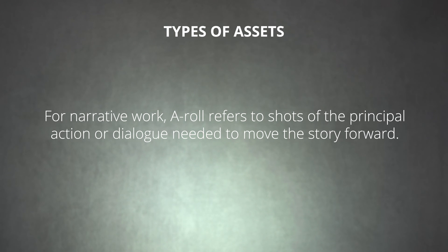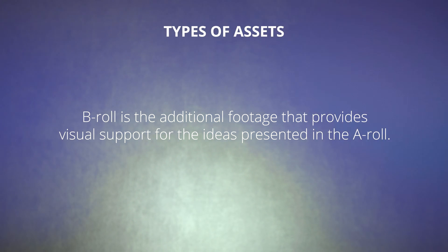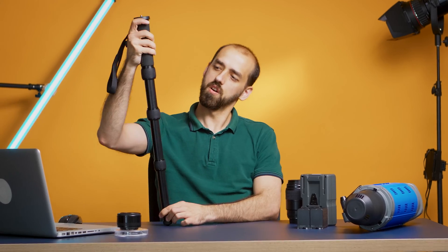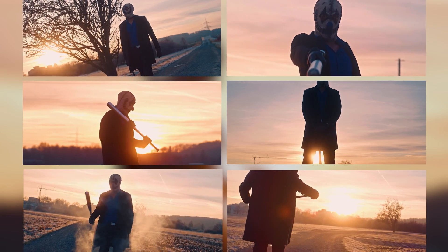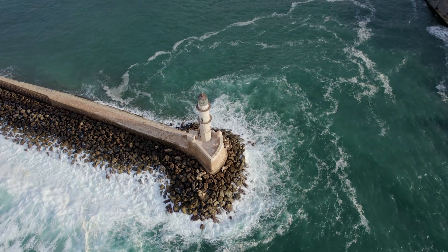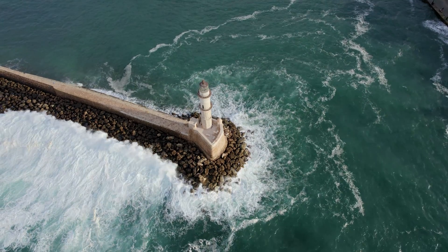In non-fiction productions, A-Roll is generally any shot featuring someone talking to the camera — an interviewee in a documentary, or a presenter in a tutorial video like this. For narrative work, A-Roll refers to shots of the principal action or dialogue needed to move the story forward. B-Roll is the additional footage that provides visual support for the A-Roll. Having a robust collection of B-Roll gives you more flexibility when editing — you can splice in B-Roll to smooth out transitions, avoid awkward jump cuts, adjust pacing, or give important moments time to breathe.